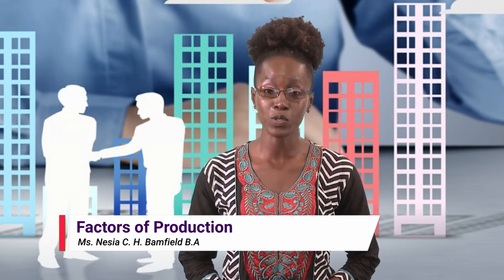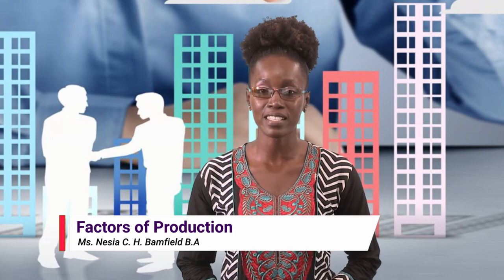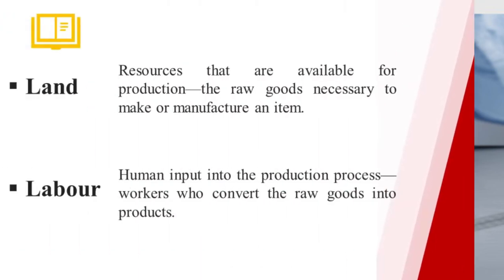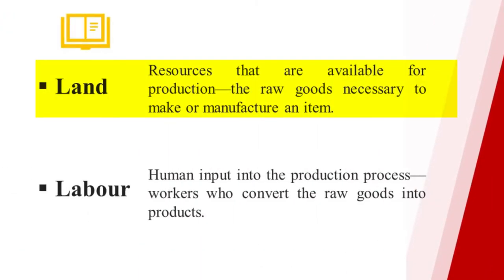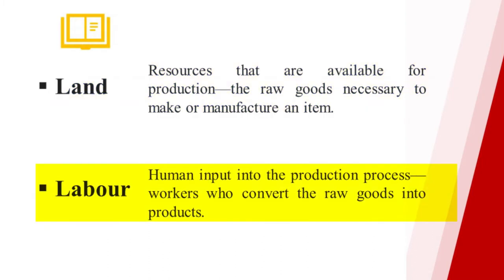Let us now define those four categories of production. Land is referred to the resources that are available for production — the raw goods necessary to make or manufacture an item. Labor is referred to as the human input into the production process — workers who convert the raw goods into products for use.